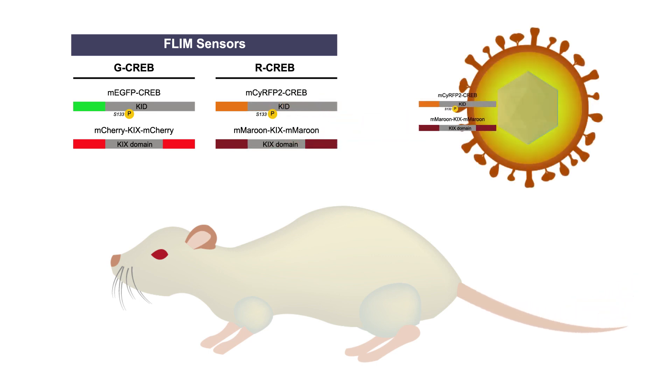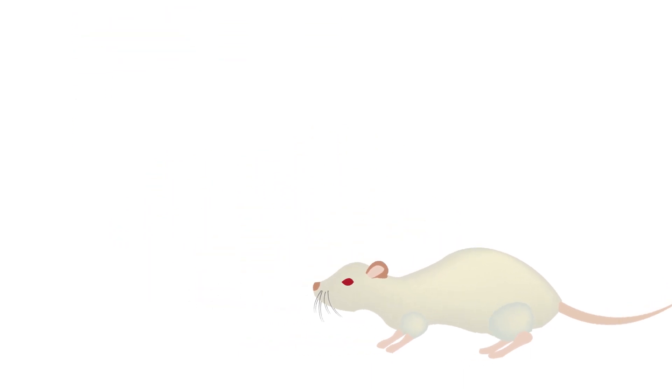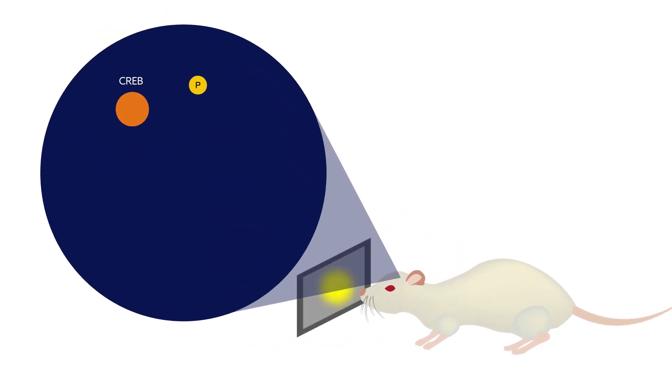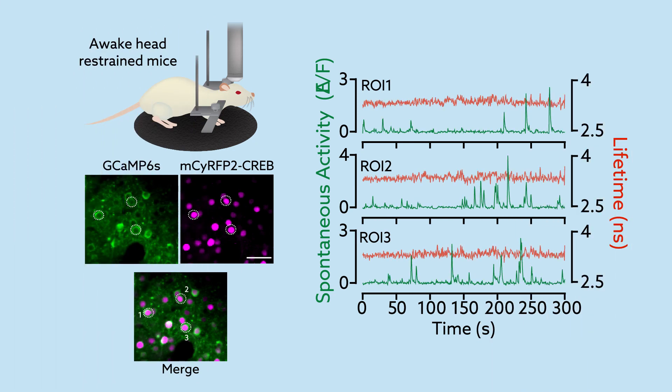Loading the sensor into lab-grown viruses allowed them to track that action into live mice, including during imaging sessions when the mice were exposed to visual stimuli such as movies. By monitoring both CREB and calcium in individual cells, the team could precisely capture the interaction between neuronal activity and CREB.